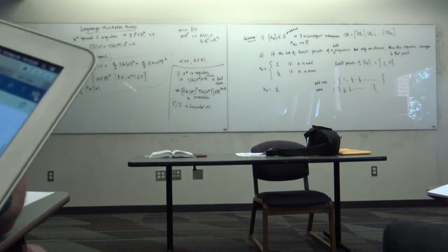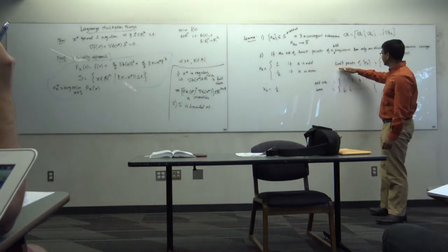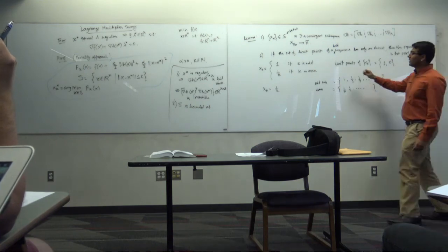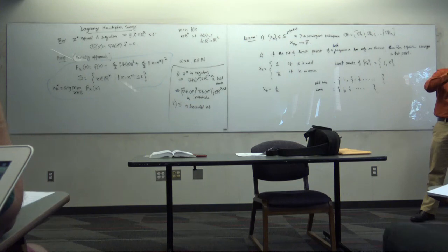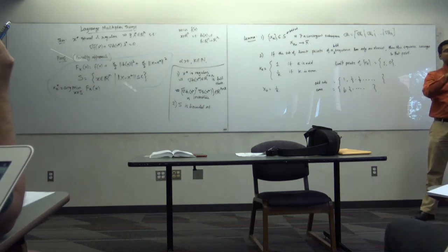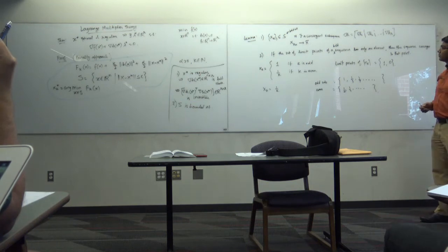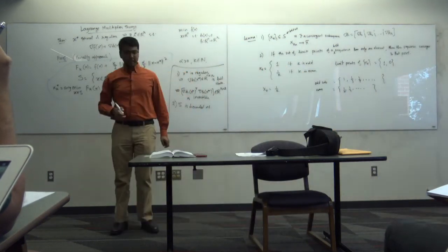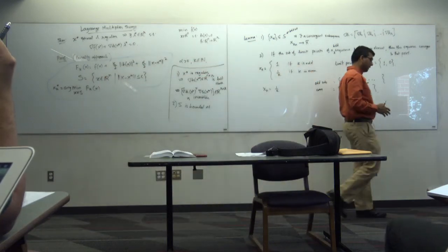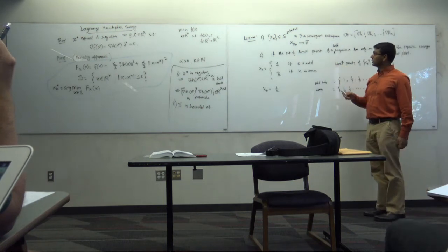Limit points haven't been formally defined in this class — I'm defining them here by example. The set of limit points is constructed by considering all subsequences that converge, and collecting their limits. I'm not sure whether infinity is explicitly included or precluded from the set of limit points — I'd need to check an analysis book.